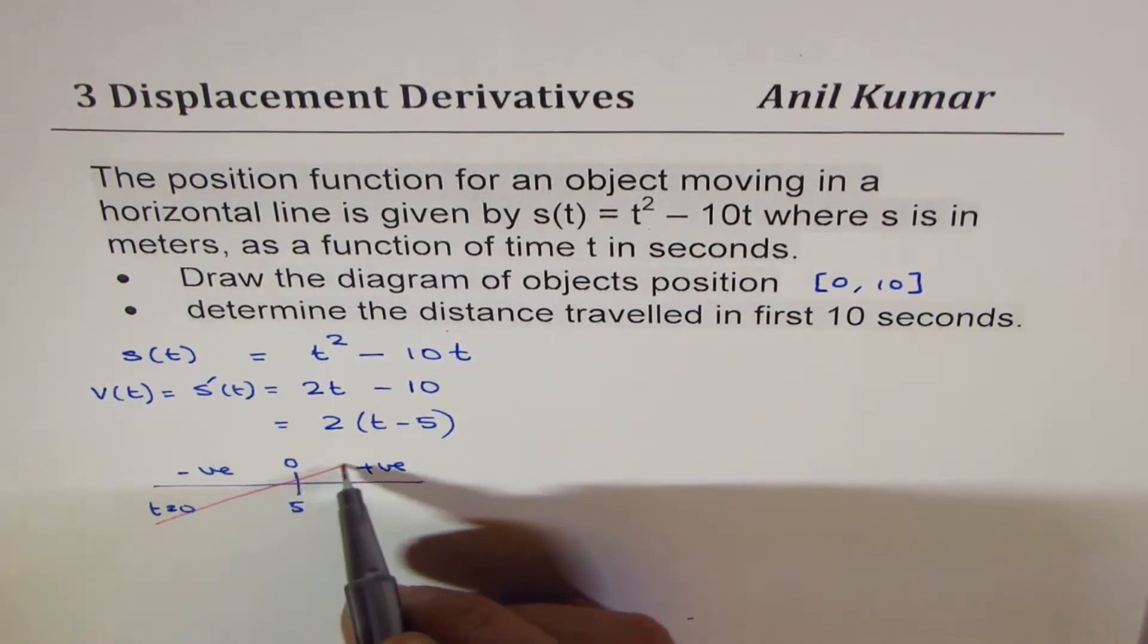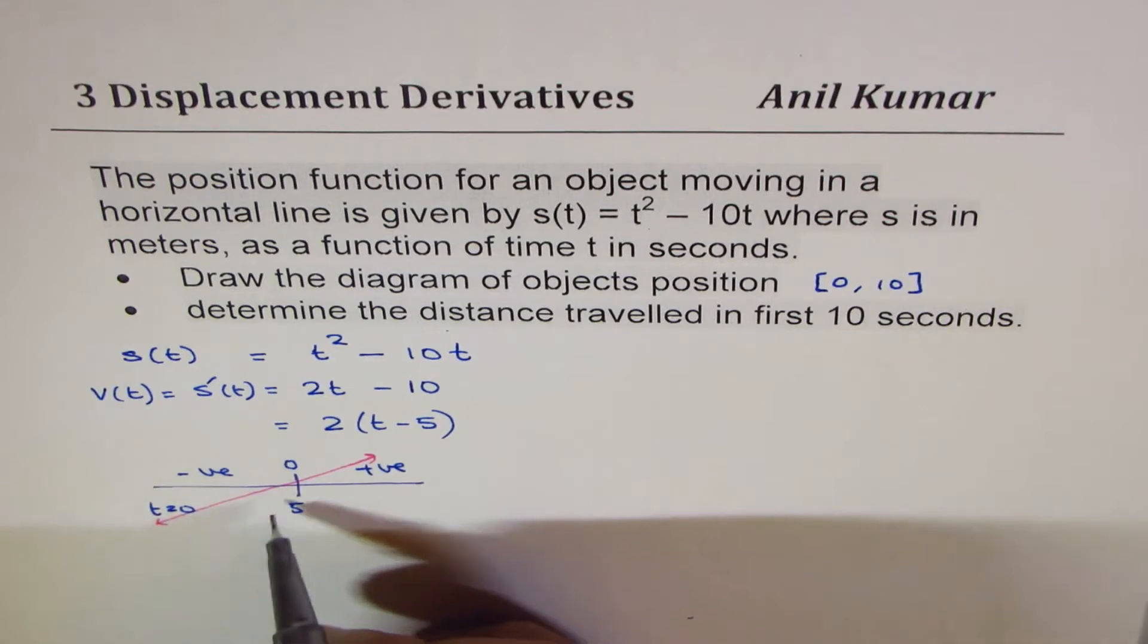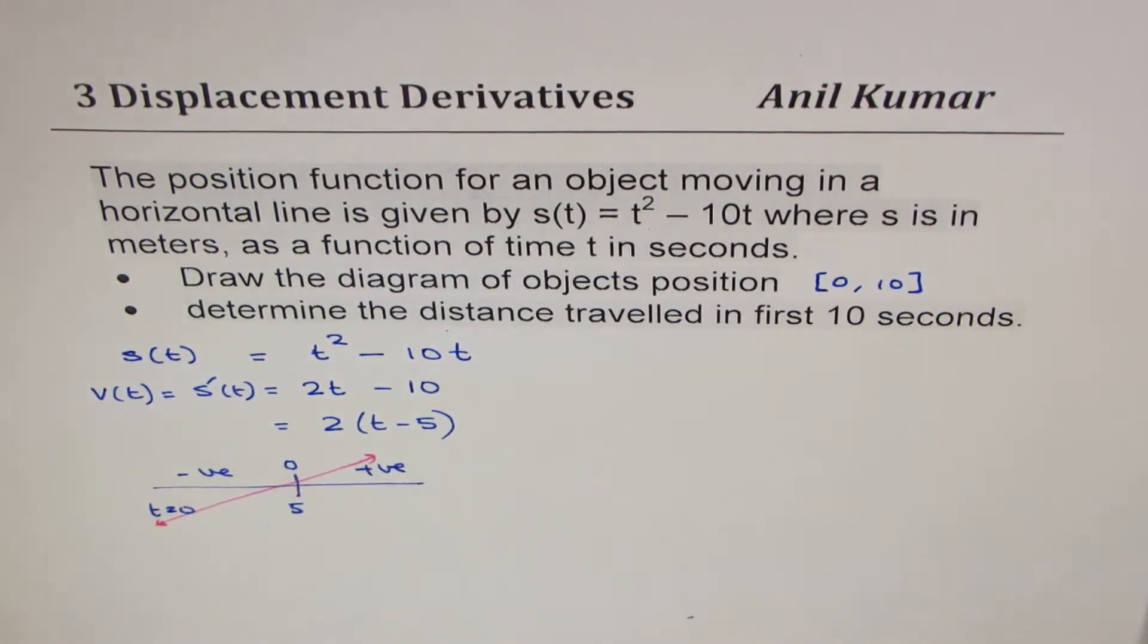So the velocity graph will be kind of like this, starting like this. So at 5, it is going to be 0.